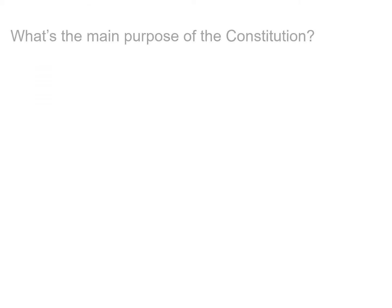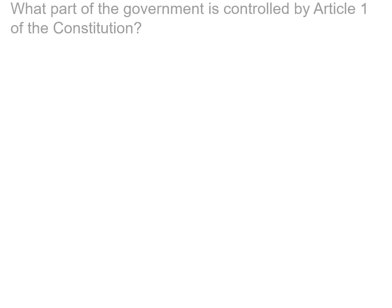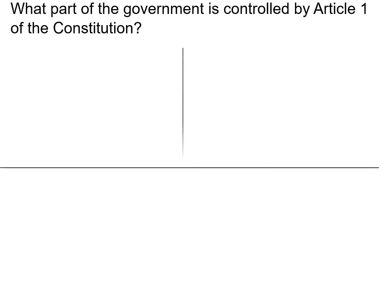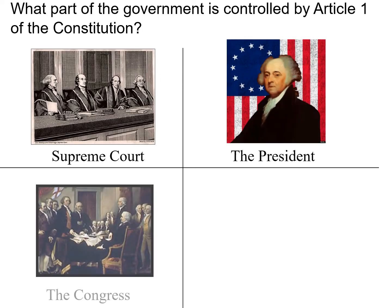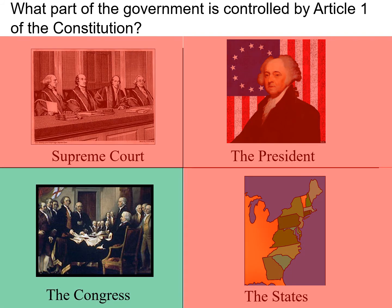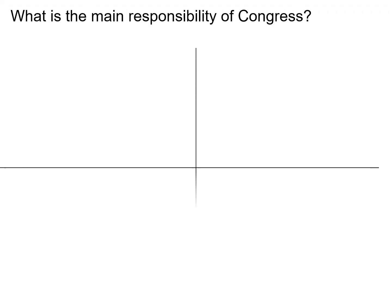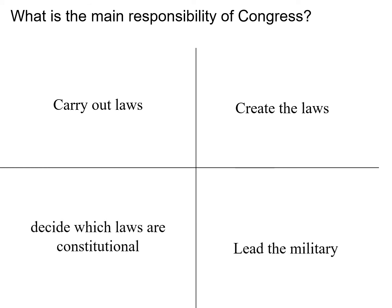Let's review. What's the main purpose of the Constitution? The purpose of the Constitution is to limit the power of the government. What part of the government is controlled by Article 1? The entire lesson was about Congress. What's the main responsibility of Congress? To create laws.